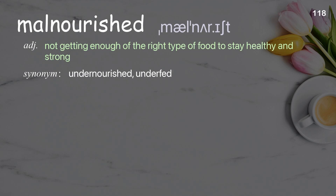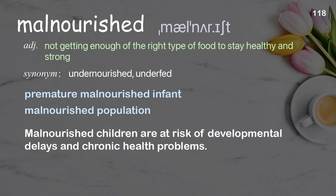Malnourished: not getting enough of the right type of food to stay healthy and strong. Examples: premature malnourished infant, malnourished population. Malnourished children are at risk of developmental delays and chronic health problems.